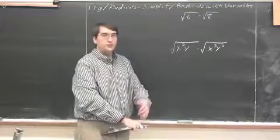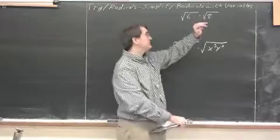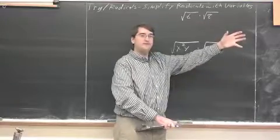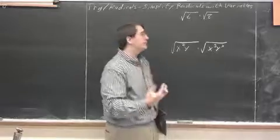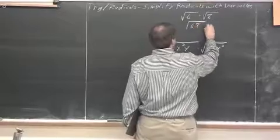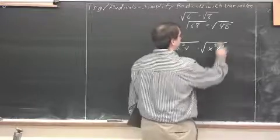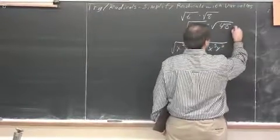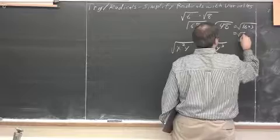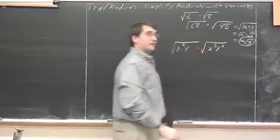In your class, you already have, or you will soon be learning, about how to combine radical expressions such as the square root of 6 times the square root of 8. We not only want to combine them, but we also want to give them in simplest form. One way to do this is to combine them into one radical expression and simplify: the square root of 48 equals the square root of 16 times 3, which equals 4 radical 3.